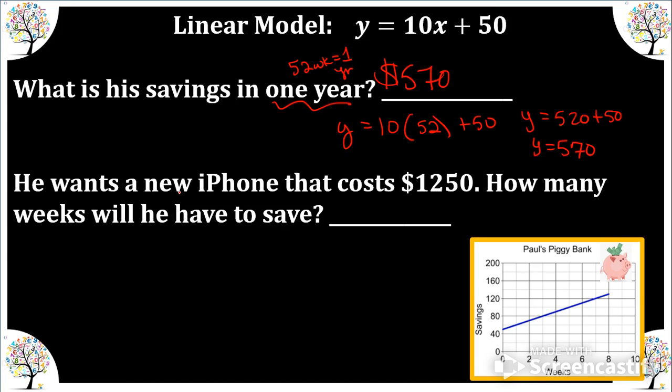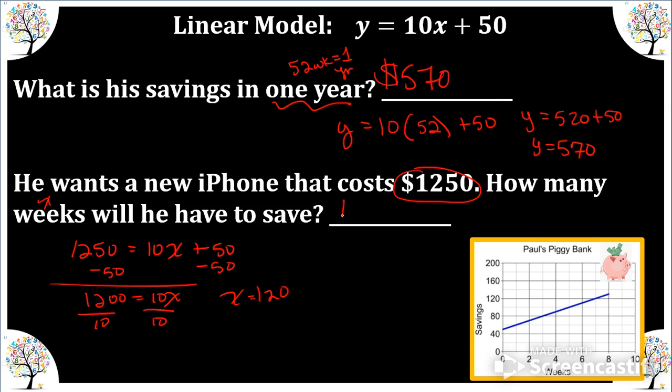He wants to buy a new iPhone that cost one thousand two hundred fifty. How many weeks? So we're looking for x. Will he have to save? So I have a total amount. So I'm going to plug that in for y. And we're going to solve for x. So subtract out the fifty. And x equals one hundred and twenty. So one hundred and twenty weeks.